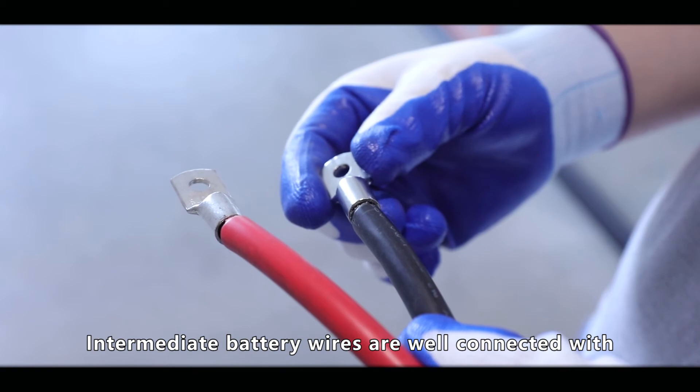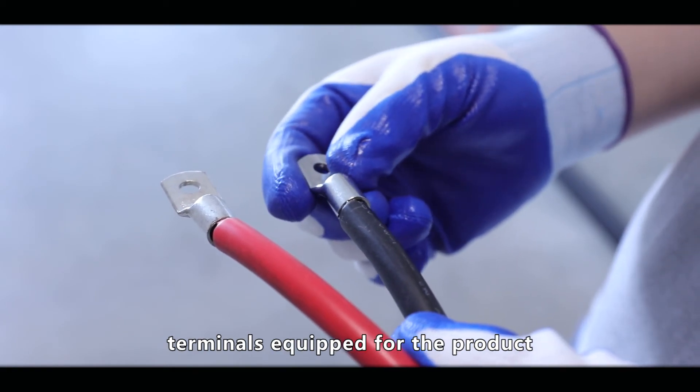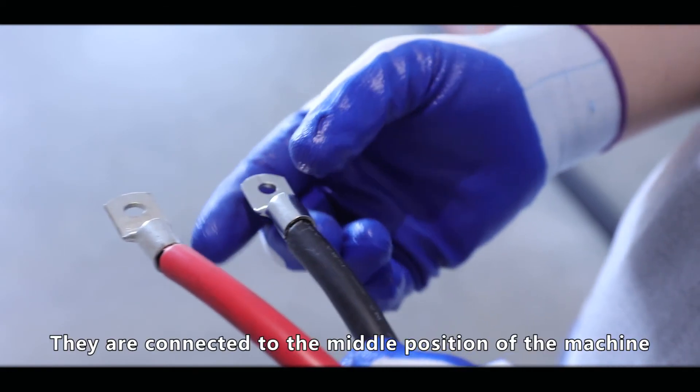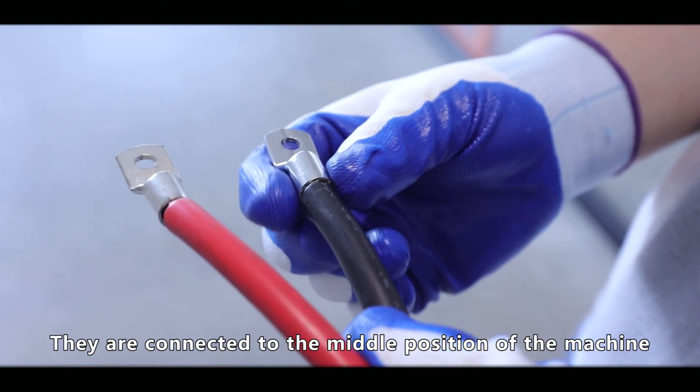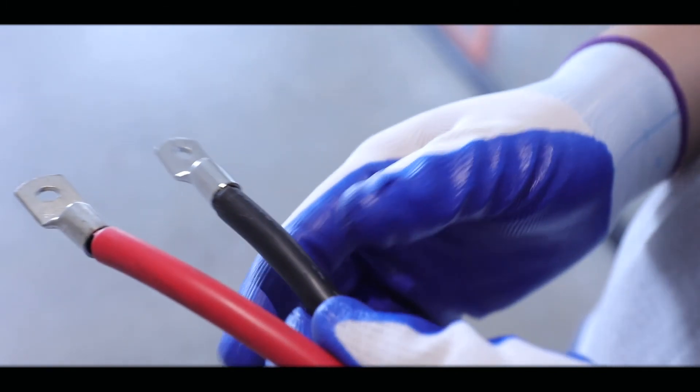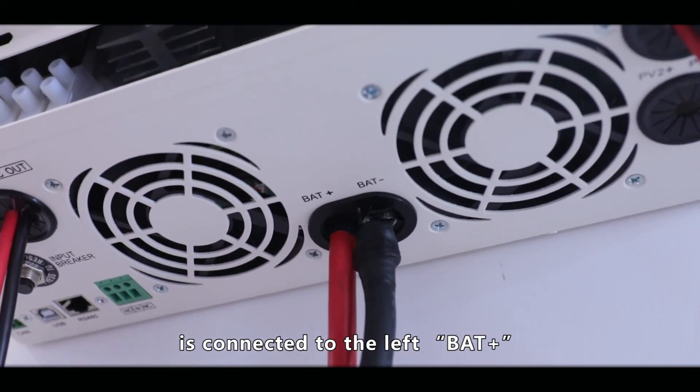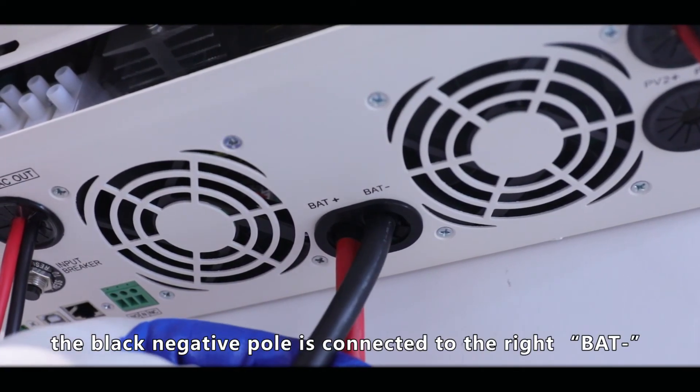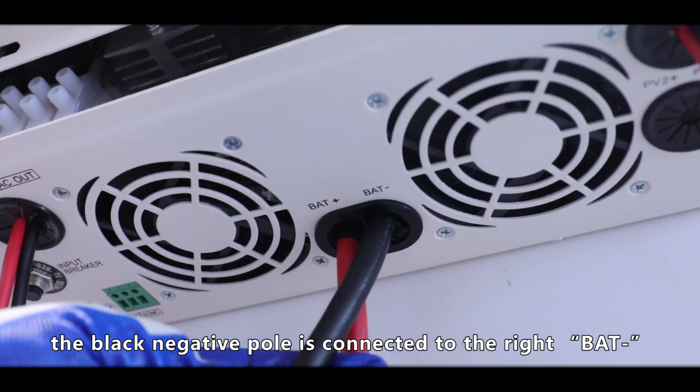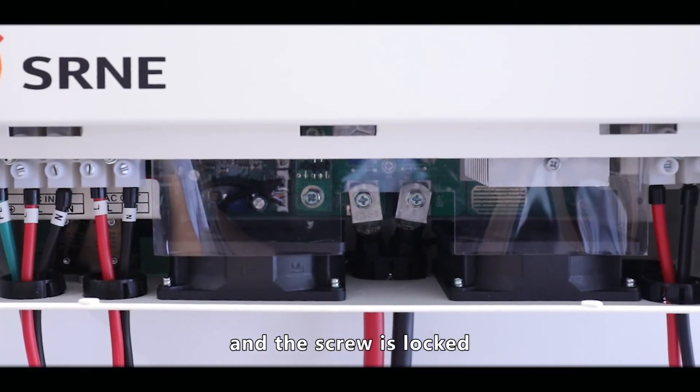Intermedia battery wires are well connected with terminals equipped with the product. They are connected to the middle position of the machine through the middle black guard ring. The positive pole of the red wire is connected to the left, BAT+. The black negative pole is connected to the right, BAT-, and the screw is locked.